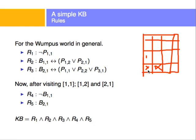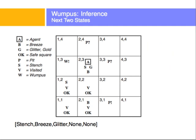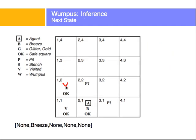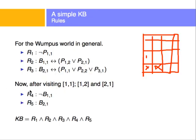I've numbered these rules R1, R2, R3 for simplicity. I started at (1,1), moved to (1,2), and then to (2,1). After visiting these squares, I've sensed no breeze at (1,1) and a breeze at (2,1). My knowledge base contains all of these rules together — rules one through five.